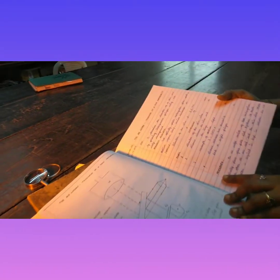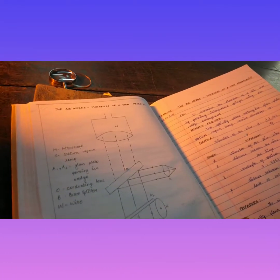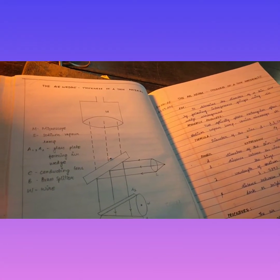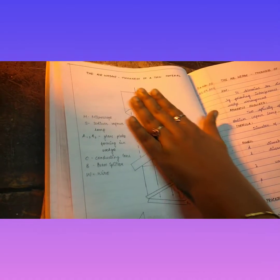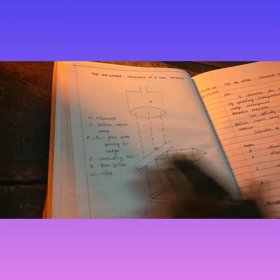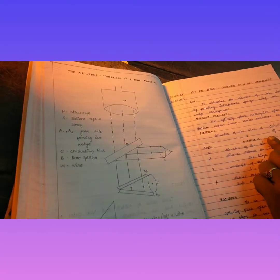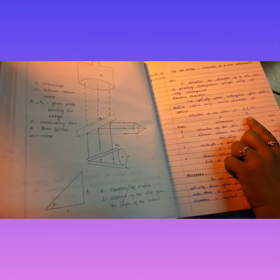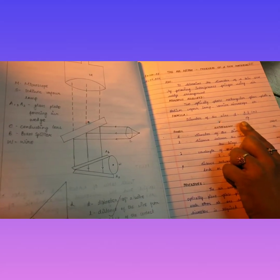In today's class I am going to explain about how to measure the thickness of a thin material by using the air wedge experiment. This is the experiment setup. Theoretically, by the formula d = λL / 2β, we have to measure the thickness of the thin wire which is given.